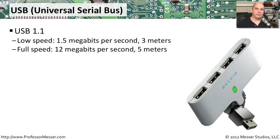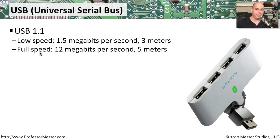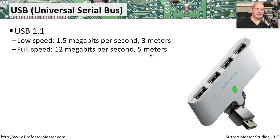The Universal Serial Bus is a very common way to connect devices into our computer. If you've got the older style USB, you're probably using USB standard 1.1. That older standard has two speeds, a low speed and a full speed. The low speed runs at 1.5 megabits per second with a cable distance of about three meters. The full speed runs at 12 megabits per second with a distance limitation of about five meters.